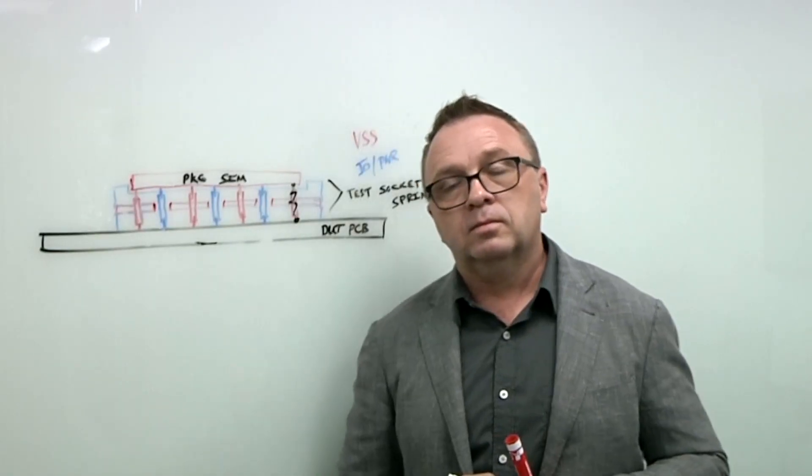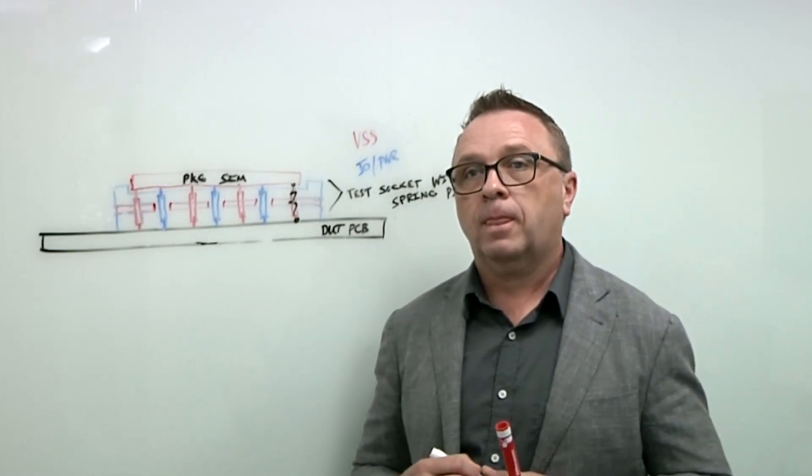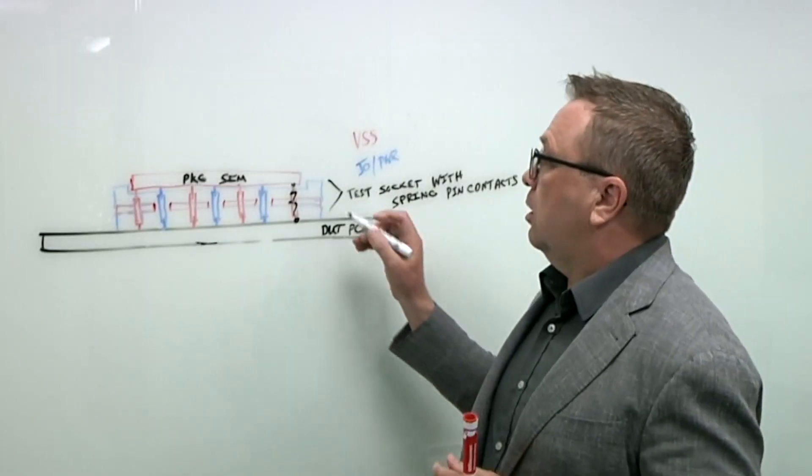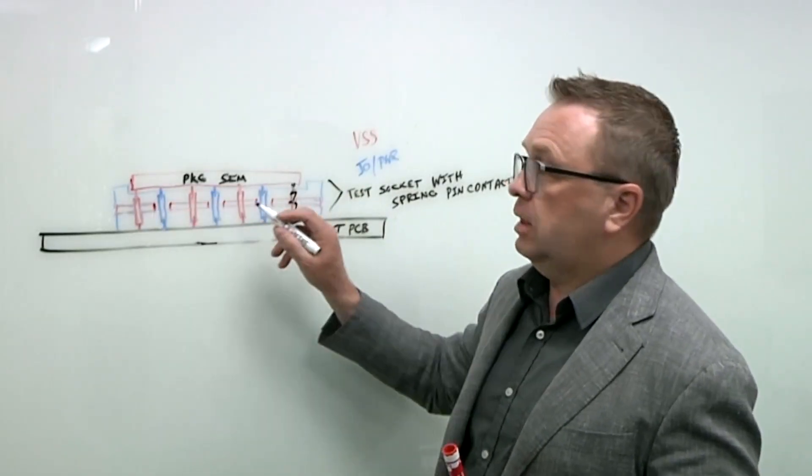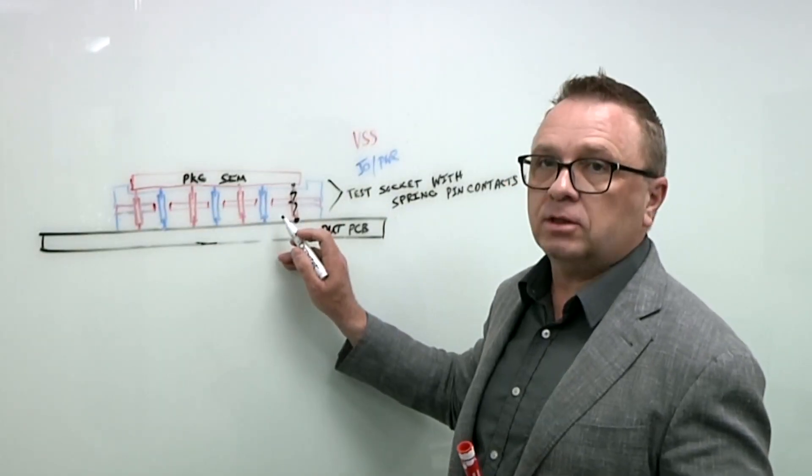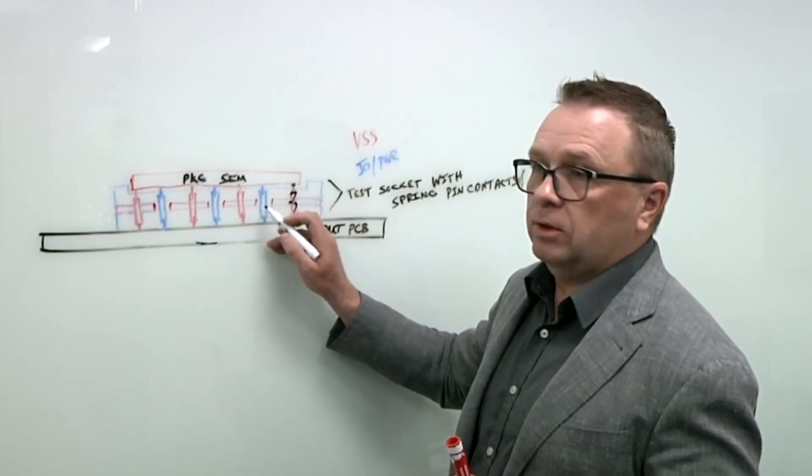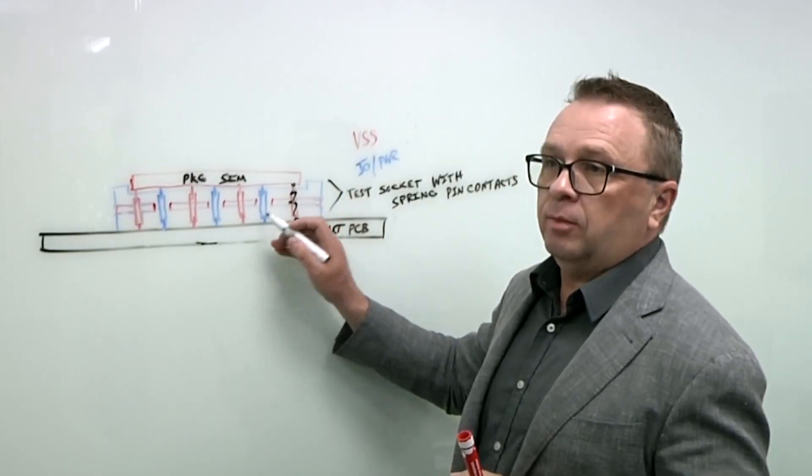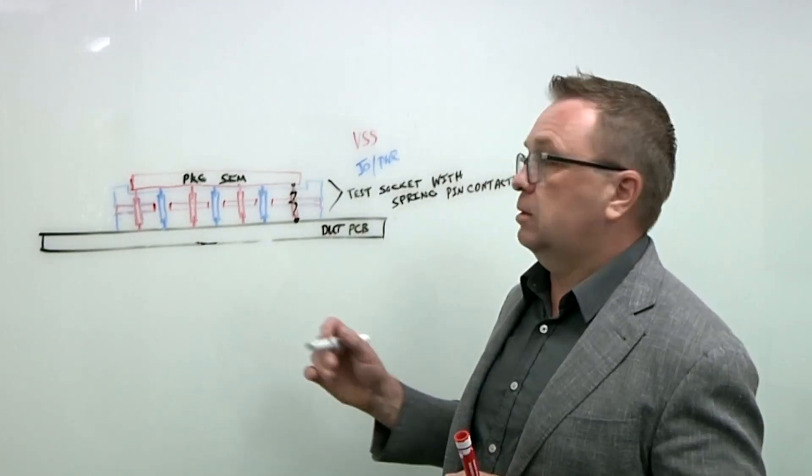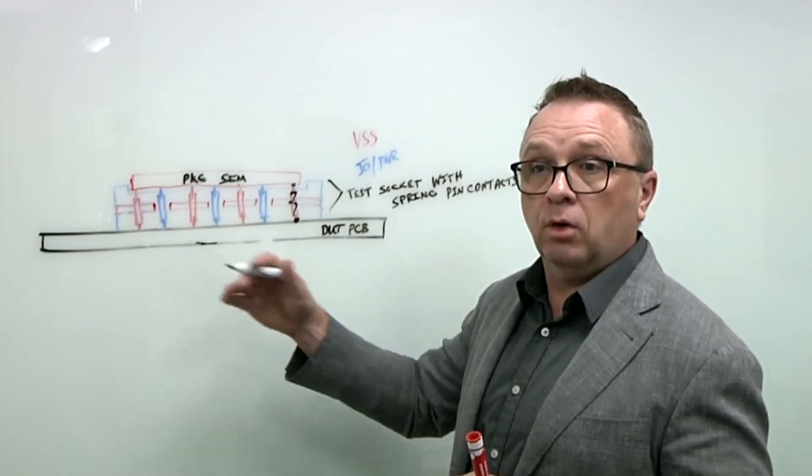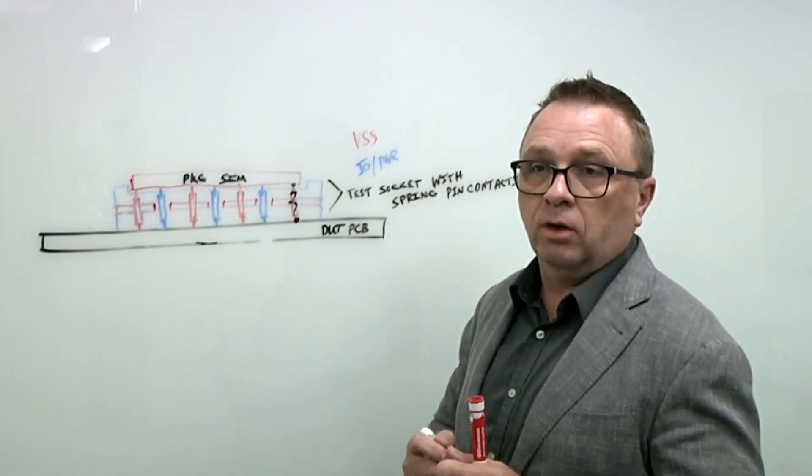And can you ensure that you make contact on every single one of these as well? Yes, our test system allows us to individually identify any pin that has a problem, whether spring force or contact resistance, whatever is the root cause, identify the pin so that it can go for maintenance and be repaired and brought back to a known good condition, or we call it known good socket.